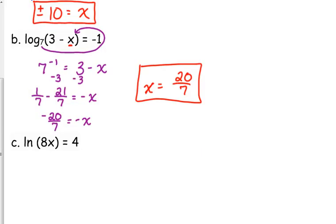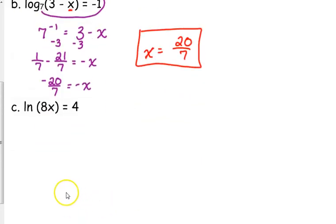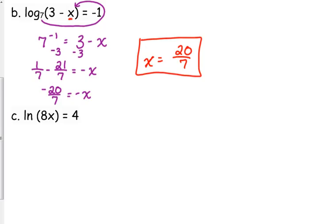Okay. Let's look at one that's a natural log. So what's the base of the natural log? E. The base of the natural log is E. So when we write that in exponential form, it's E to the 4th is equal to 8x.